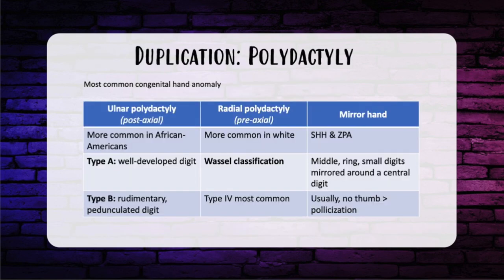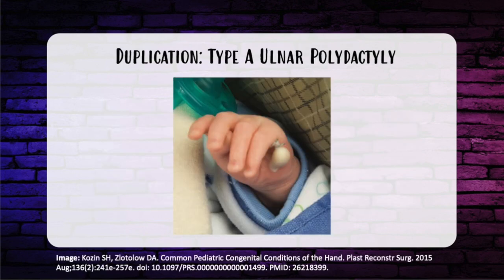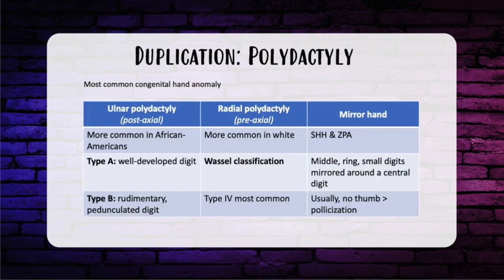Polydactyly — more than five digits on the hand — is the most common congenital hand anomaly. There are two kinds: radial and ulnar polydactyly. Ulnar polydactyly is post-axial and more common in African Americans. Type A has a well-developed supernumerary digit requiring operative separation with transfer of important parts, and is more often associated with syndromes. Type B has a rudimentary or pedunculated digit that can often be addressed with suture ligation or simple snipping in the office or nursery.